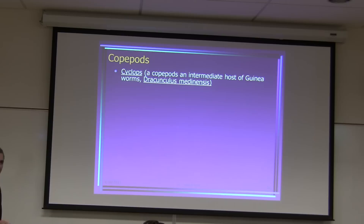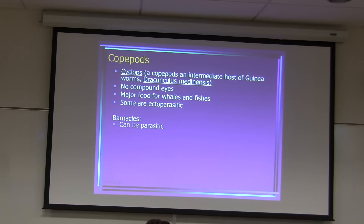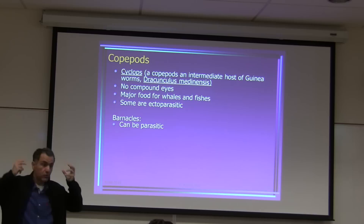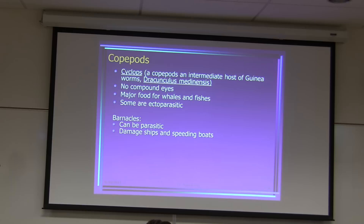Don't worry about the detailed classification of copepods. Some species in this group are major food sources for whales and fish. Some are ectoparasitic. Barnacles are ectoparasites of whales — those little things you see attached to whales. Barnacles also attach to ships and are a real pest; they can damage ships and slow them down.